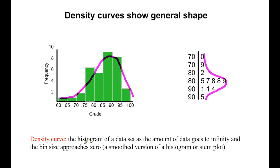So if you want to get technical, it would be as the amount of data you collect goes to infinity. Instead of 100 data points or 10 data points, infinite data points, and your bin size gets really, really small, it would smooth out your histogram really nicely.